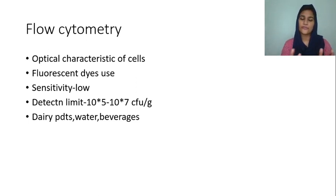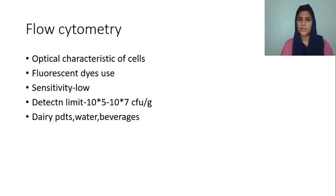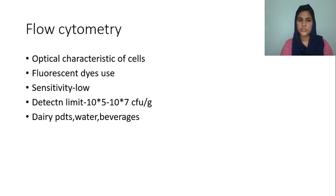Flow cytometry is used for dairy products, water, beverages, and so on. Fluorescent dyes are used in this method, but the sensitivity is low, with a detection limit of 10^5 to 10^7 CFU per gram. It is applied to dairy products, water, and beverages.